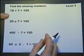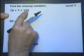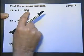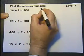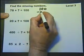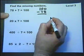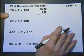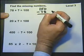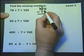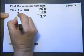Find the missing numbers. 78 add something is 100. There are lots of ways of doing these questions, as there are with all maths questions. But I would say the easiest way is if I take 78 away from 100, I'll find what the missing number is. We don't know if this is a calculator or non-calculator paper, so let's do it without a calculator. We borrow: 10 take away 8 is 2, 9 take away 7 is 2, so the answer is 22.